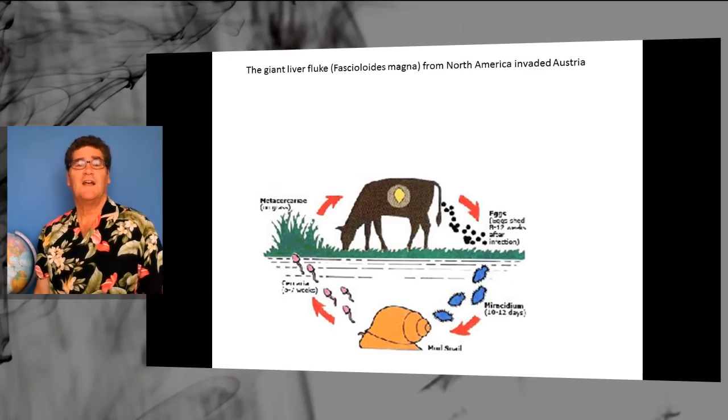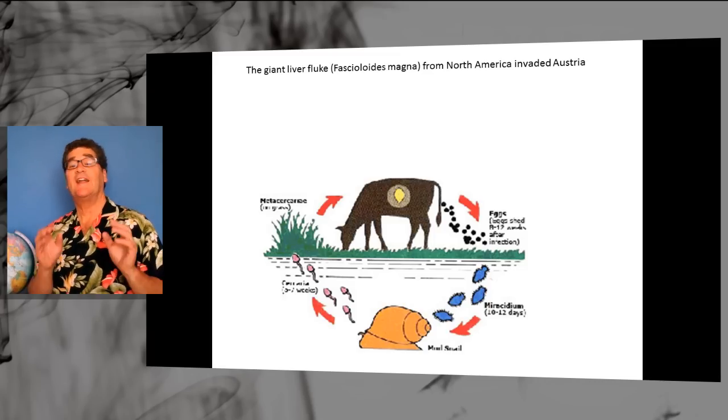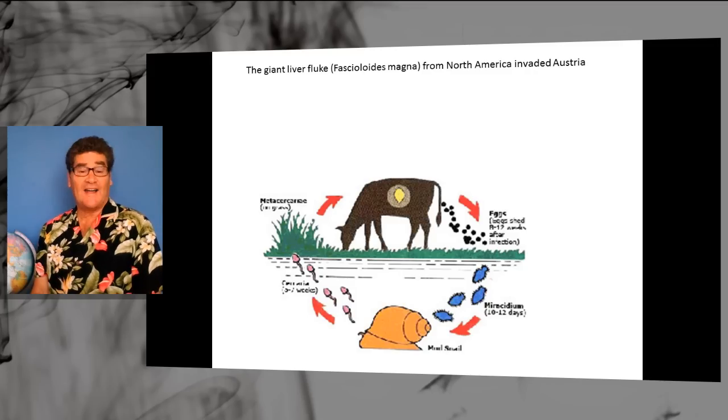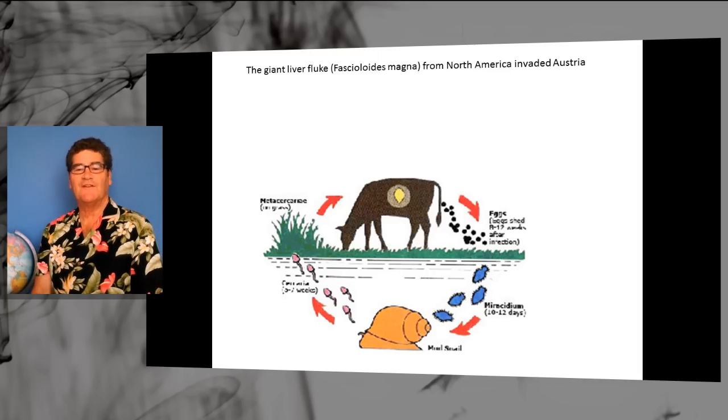Now let's talk about liver flukes, giant liver flukes. They're native to North America, but recently they've invaded Austria. And what you might find on a farm in Austria is a cow with liver flukes. And every time it poops, the eggs of the fluke also come out.